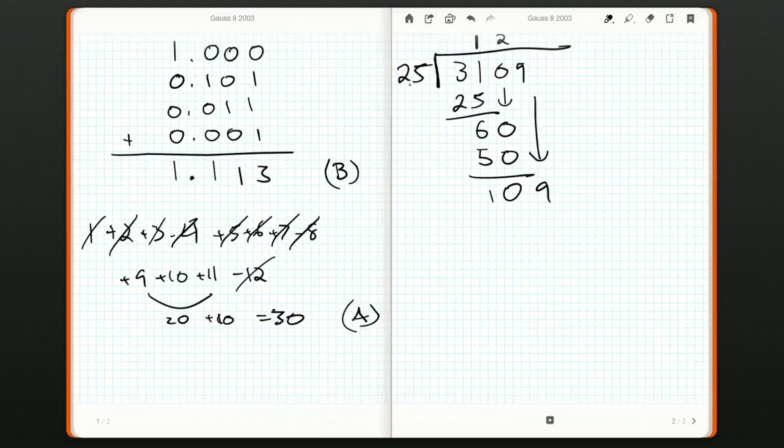So 109. How many times does 25 go into 109? Well, 4 times. Because 25 goes into 100 exactly 4 times. So we subtract. We get that 9. And now we go into our decimals.